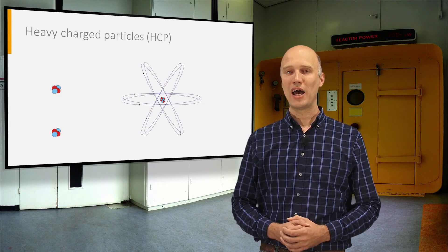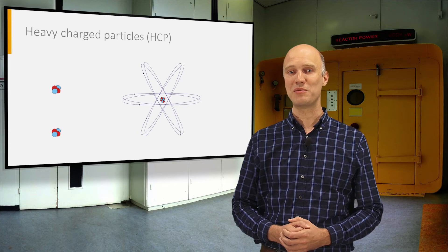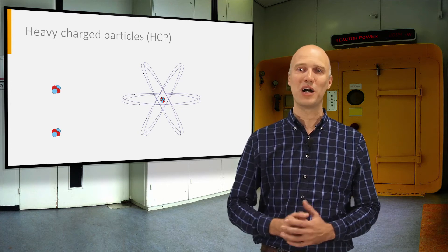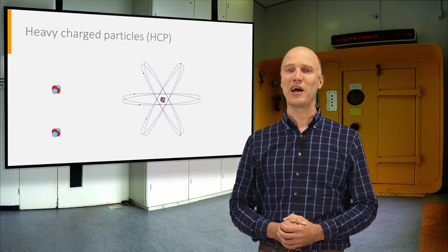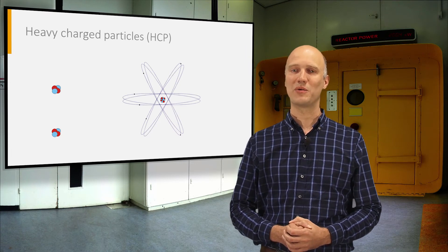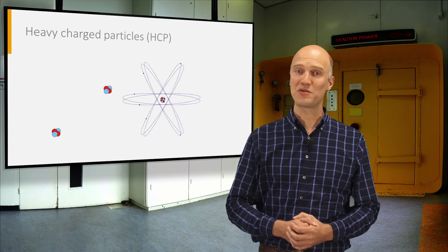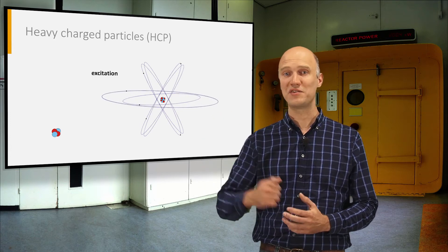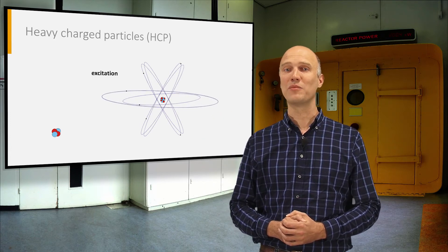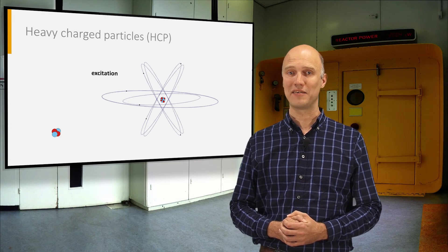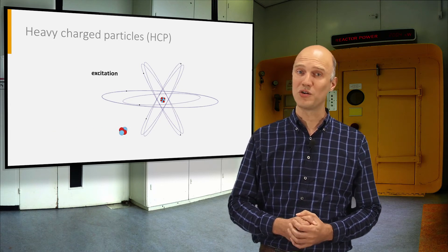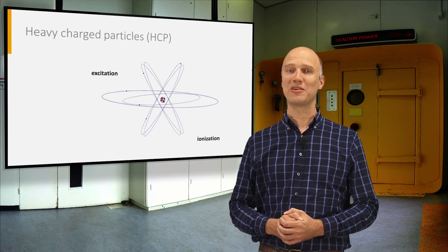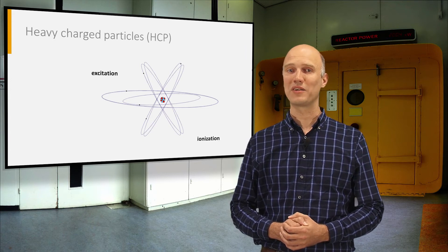Heavy charged particles lose their energy mostly through many small collisions with bound electrons in the material via Coulomb or electromagnetic interaction. The charged particle can lift a bound electron to a higher energy state and leave an atom of the material in an excited state. It can also strip an electron from the atom, in which case we talk about ionization.